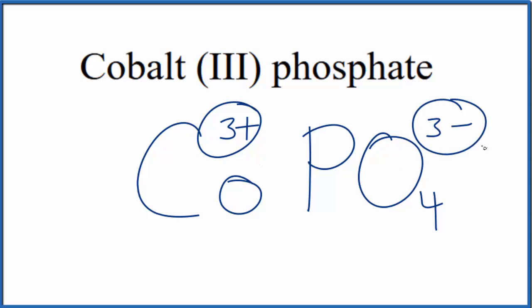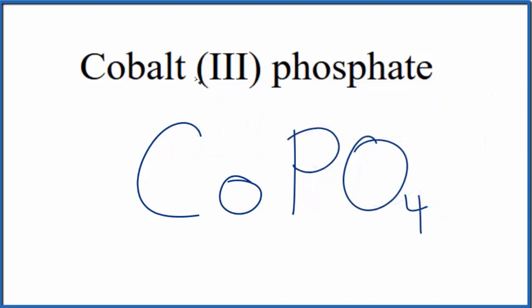So 3 plus, 3 minus, that adds up to 0, gives us a net charge of 0. This is the formula for cobalt-3-phosphate, CoPO4. This is Dr. B, and thanks for watching.